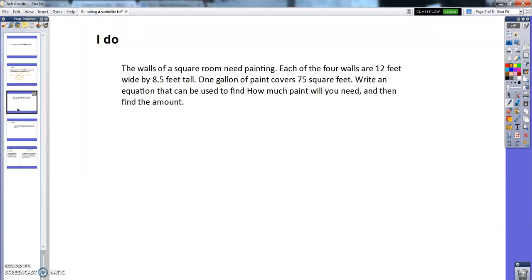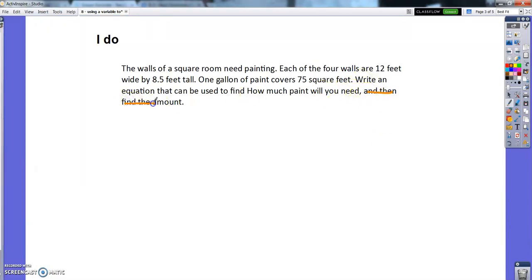I do. The walls of a square room need painting. Each of the four walls are 12 feet wide by 8 1/2 feet tall. One gallon of paint covers 75 square feet. Write an equation that can be used to find how much paint you'll need and then find the amount. I'm not even that worried today about finding the amount. The main thing I want you to do is just be able to use variables and the information to write an equation that shows the situation. So let's talk about what we know. It's going to take some drawing and some thinking. This is really problem solving and not a fast thing to do.